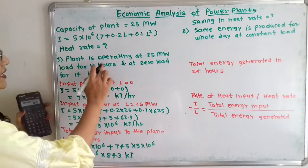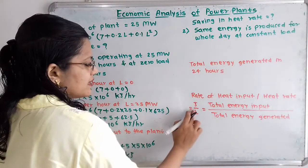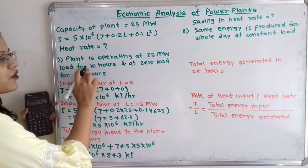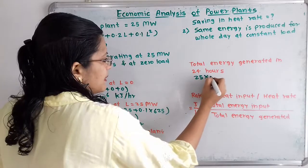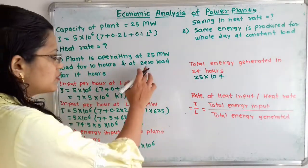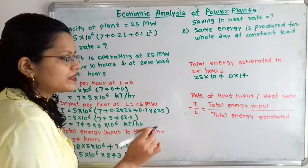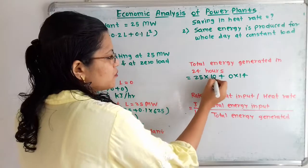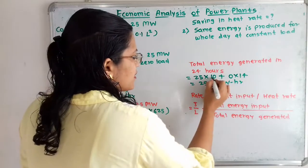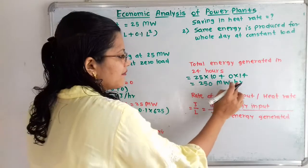The energy generated is the output in the form of load L. The load is 25 megawatt for 10 hours, and zero load for the remaining 14 hours. So total energy generated = 25 × 10 + 0 × 14 = 250 megawatt-hour.